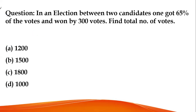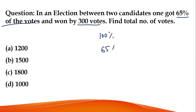In an election between two candidates, one got 65% of the votes and won by 300 votes. The total is 100%. If the winner got 65% of the votes, then the other candidate will get 35%.